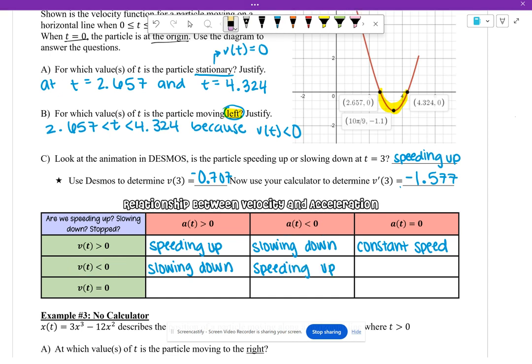And then finally, if we've got negative velocity, but again, acceleration is zero, we've got constant speed.